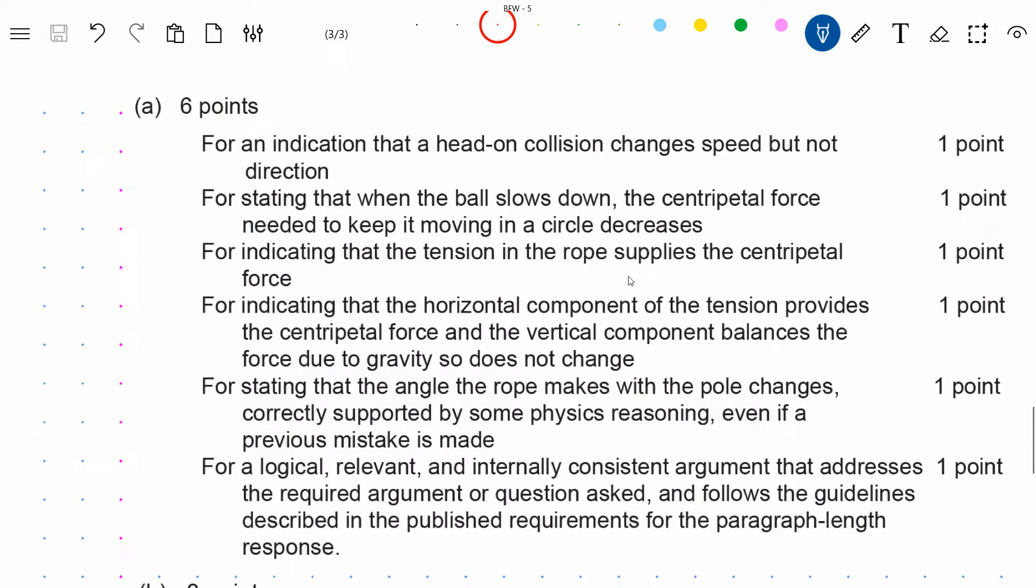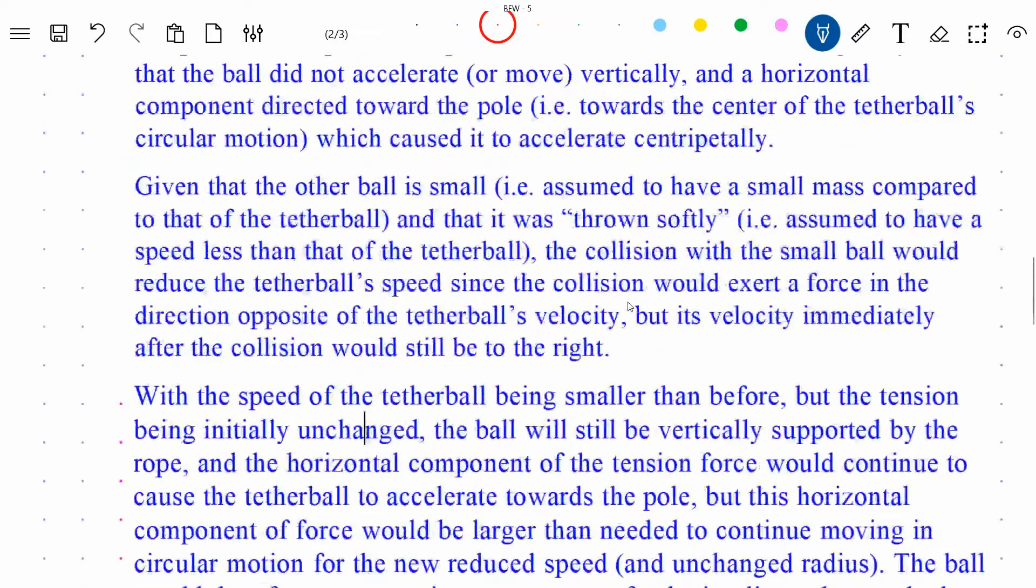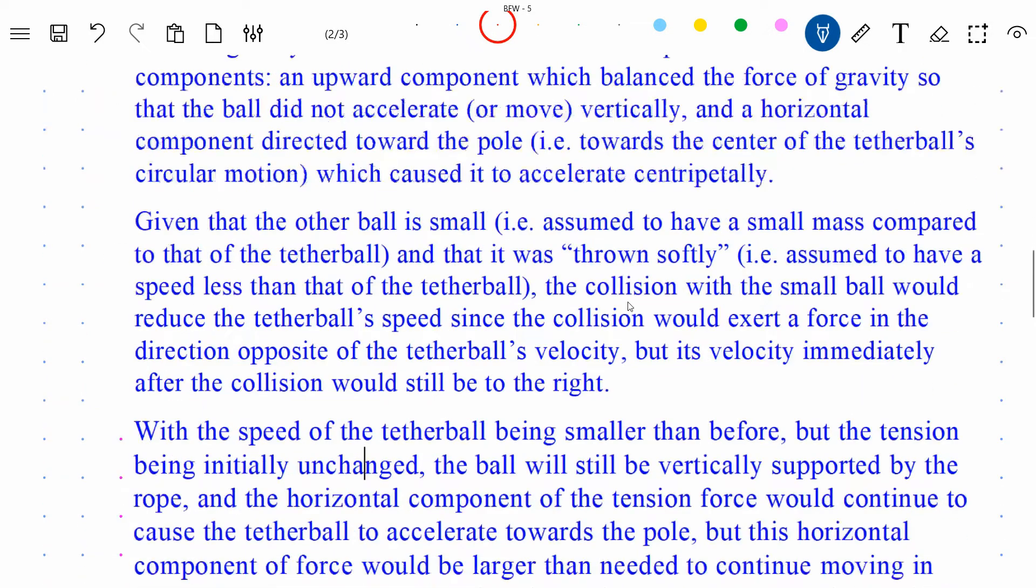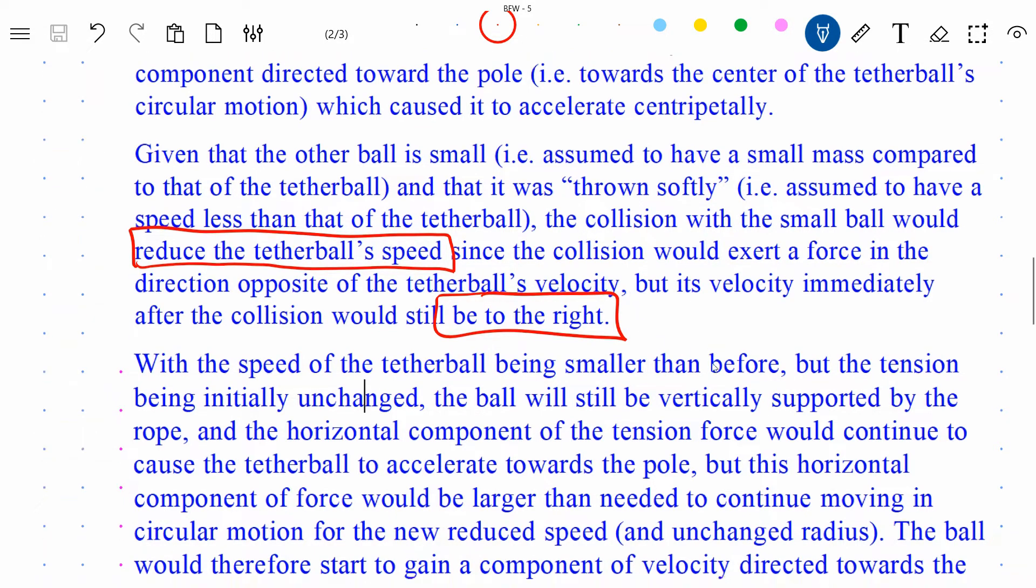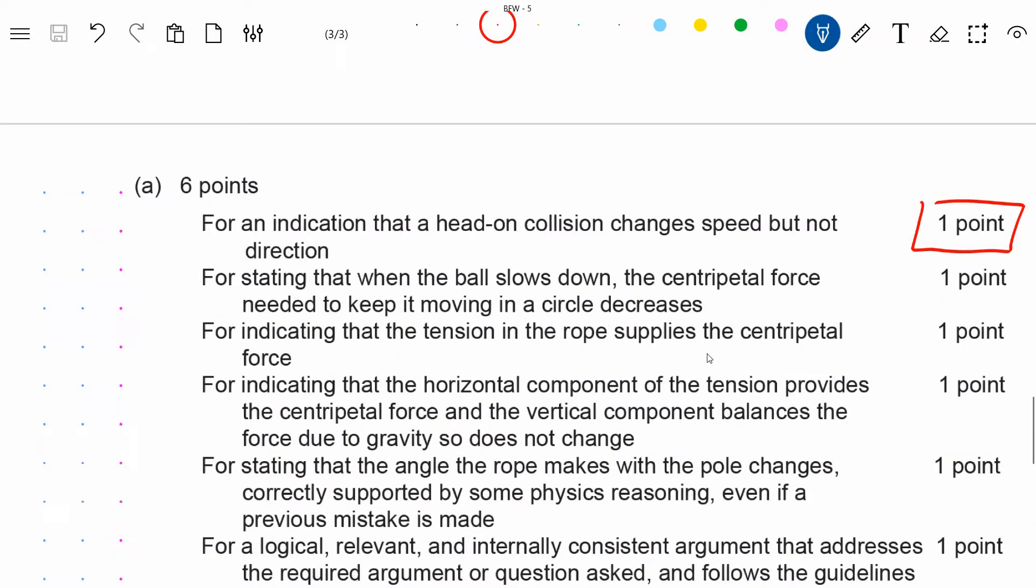So when you're writing your response, you don't know exactly where the points are, and I wrote this up actually before I looked at the points. I then looked at the points and just made sure I clarified a couple of small details, but mostly it was there already. You don't know where the points are, so don't take any chances. Try to include as many relevant and correct details as you can in the time that you have available. All right, so here's the scoring guide for part A. Notice that it's worth six points. There was a lot to be said in part A. So let's go through this point by point and see where exactly I would earn my points. We're told that the first point is for an indication that a head-on collision changes speed but not direction. In my answer, I said fairly early on that because of that collision, it would reduce the tetherball's speed since the collision would exert a force directly opposite, but the velocity would still be to the right. So I think that would qualify for that point. The motion is still in the same direction as before, to the right, at a lesser speed.